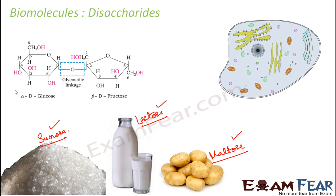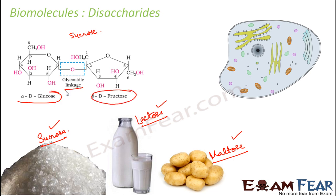Here you can look at the structure of sucrose. You can see there is one glucose unit and one fructose unit, and they are joined together by a glycosidic linkage. That is the structure of sucrose.